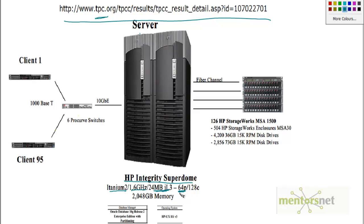There are 64 processors and it is dual-processor, so there are 128 cores available. The random access memory in this machine is almost 2 terabytes. These are the client machines — client 1 through client 95 — and all these things are connected to a switch with a network capacity of 10 Gigabit Ethernet.